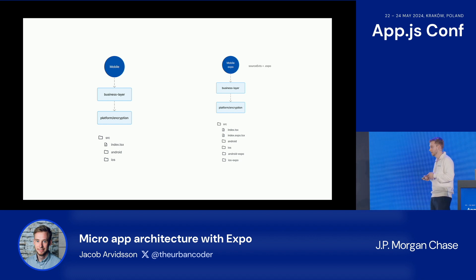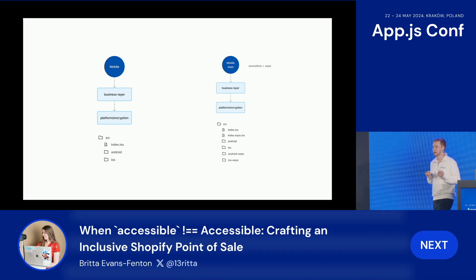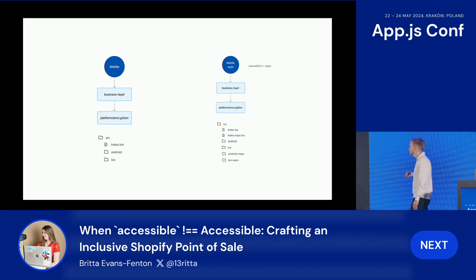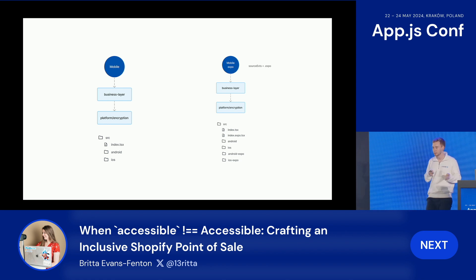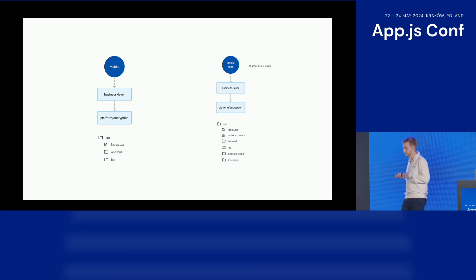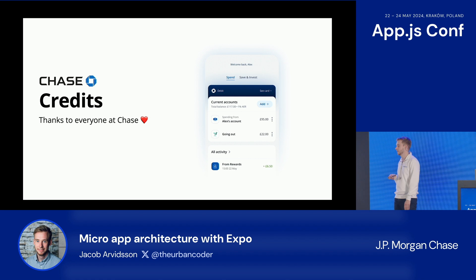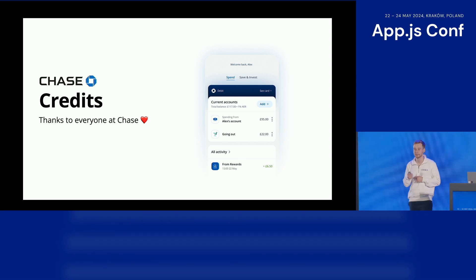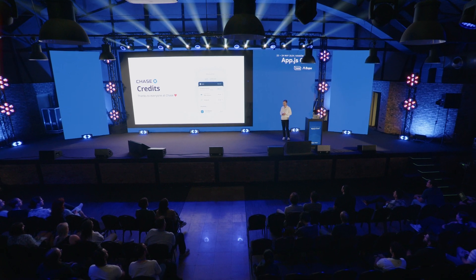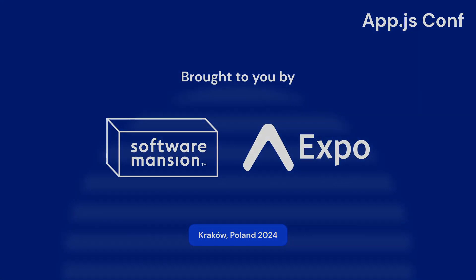I think this is really exciting. For the first time, we have the ability to create very complicated apps that have the potential to outlive the platforms they're currently being built for. If you're using tools like React Native and Expo with a good, scalable, maintainable architecture, you can go to any platform your users are on — whether that platform already exists or will be added in the future. Thank you to everyone at Chase who's been working hard on what I presented today, and thanks to everyone here who listened. If you have any questions, please come and talk to me. Enjoy the rest of the conference.